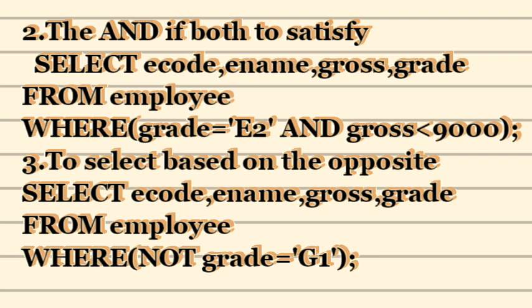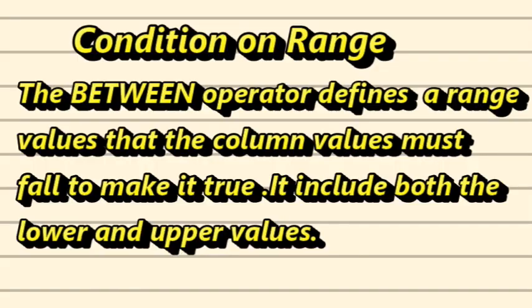The third logical operator is NOT. The NOT operator is based upon the opposite condition — if the condition we have defined is NOT met, you present the other output. For example: SELECT employee code, employee name, gross WHERE NOT grade equals 'G1'. This will print all details where the grade is not G1; wherever G1 appears it will not print, but everything else will be printed.